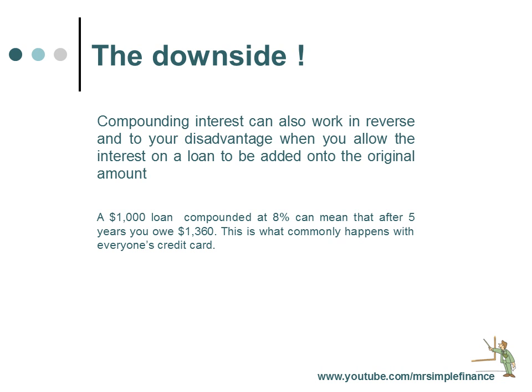There is however a downside of compounding interest. It can actually work in reverse and to your disadvantage when you allow the interest on a loan to be added on to the original amount. For example, a $1,000 loan compounded at 8% can mean that after 5 years you owe $1,360. This is what commonly happens with everyone's credit card, where their interest is simply added on to the original amount they owe, and over time it can cause quite a nasty surprise for everyone concerned.